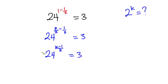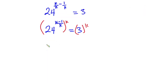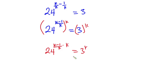The next step is to raise both sides of the equation to the power k. So we have 24 to the power [(k minus 1)/k] times k, equal to 3^k. You can see that this k will cancel, and now we have 24 to the power (k minus 1) is equal to 3 to the power k.